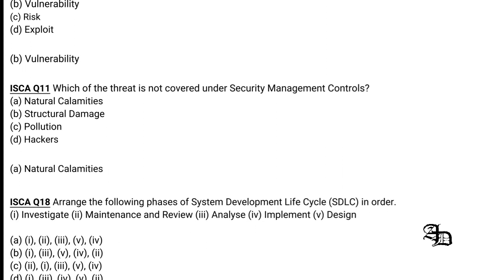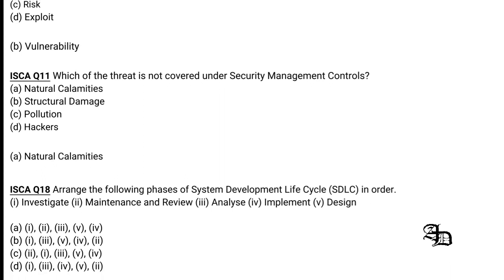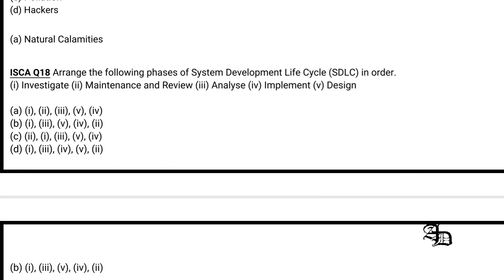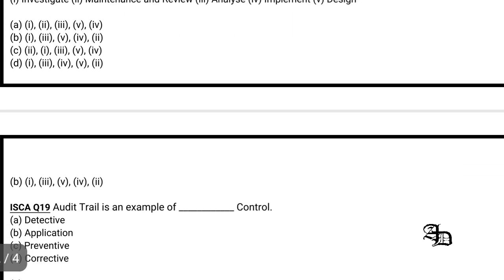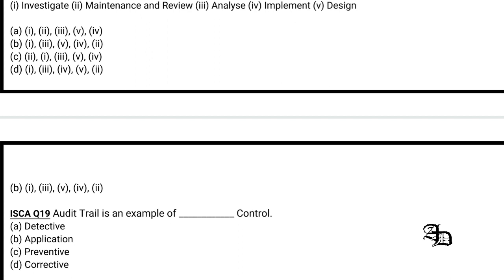Question 6: Arrange the following phases of the System Development Life Cycle in order: Investigate, Maintenance and Review, Analyze, Implement, and Design. The correct order is: first Investigate, second Analyze, third Design, fourth Implement, and fifth Maintenance and Review — giving sequence 1, 3, 5, 4, 2, which is option B.